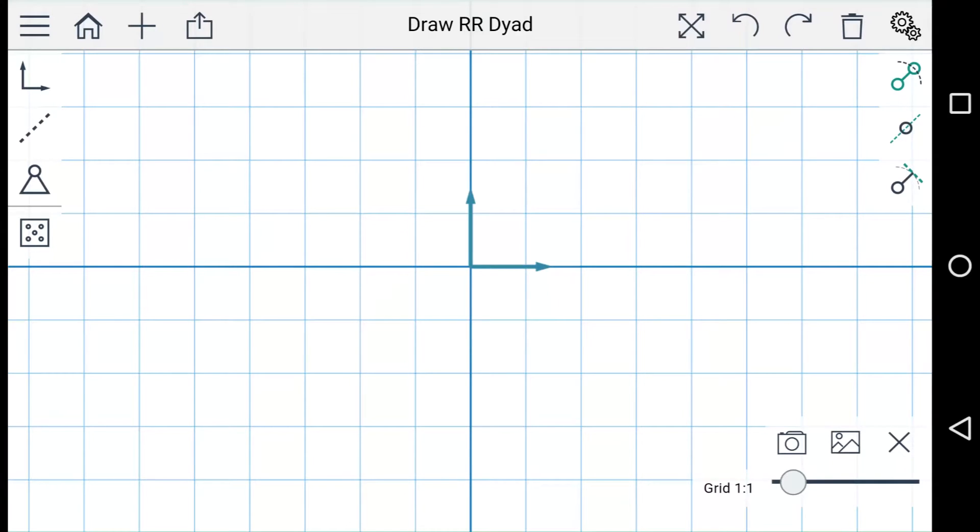In this video, I'm going to demonstrate how to simulate 4-bar linkages in MotionGen. Along the right side here is the simulation menu.